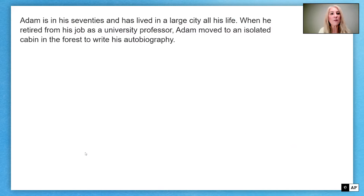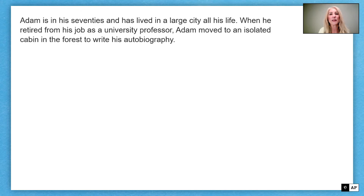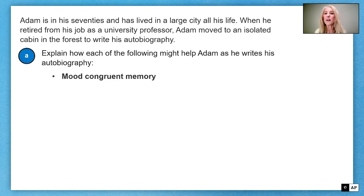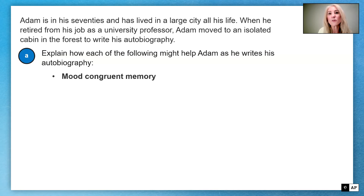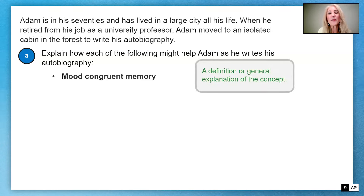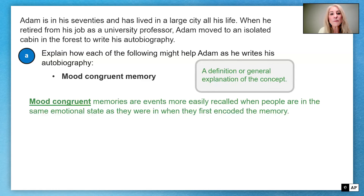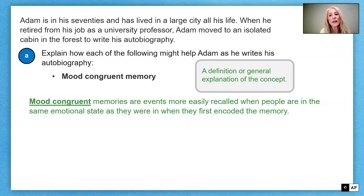Moving to part A — Adam in his 70s has lived in a large city, retired from his job as a university professor, and moved to an isolated cabin in the forest to write his autobiography. The first concept is mood congruent memory. Mood congruent memories are events more easily recalled when people are in the same emotional state as they were when they first encoded the memory.